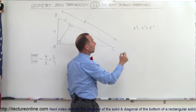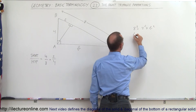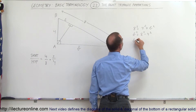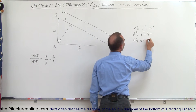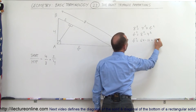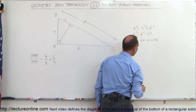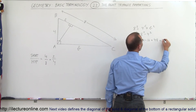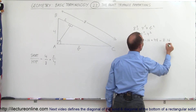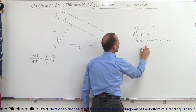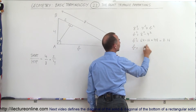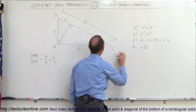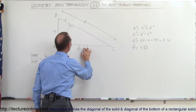So therefore, B squared can be found. B squared is equal to 8 squared minus 4 squared, or B squared is equal to 64 minus 16, which is equal to 48. And 48 can be written as 3 times 16. So if we take the square root of both sides, we can say that B is equal to the square root of that, which is equal to 4 times the square root of 3. So that would be the length of side B.